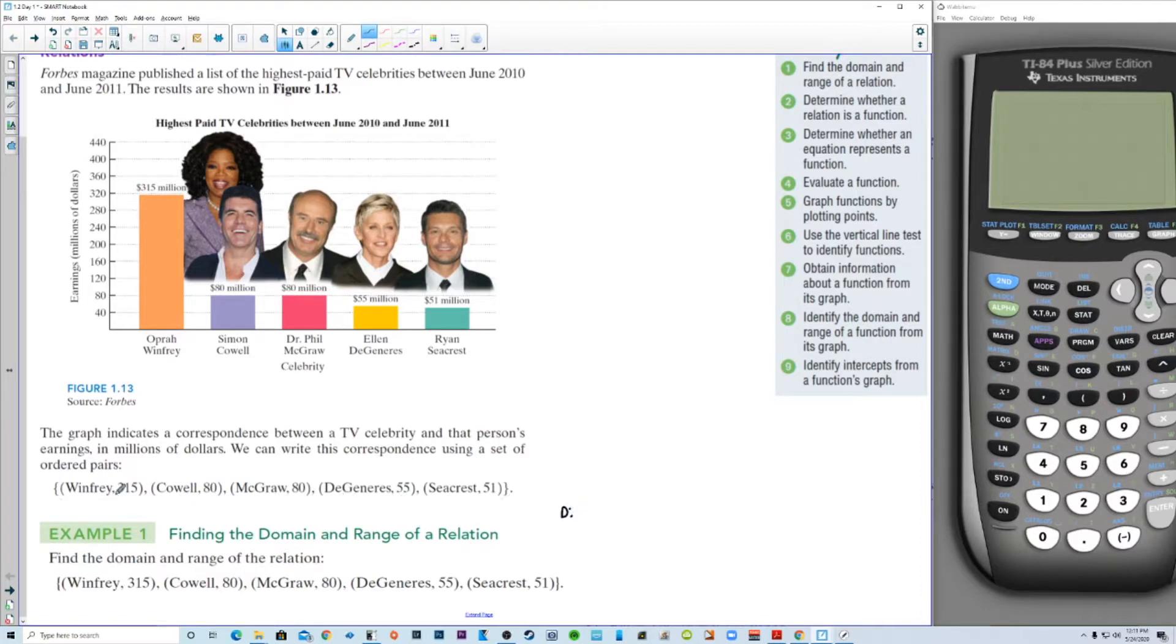So the domain is the set of input values or set of X's. In this case, they're actually words. Names, that is. So Winfrey, Cowell, McGraw, DeGeneres. I had to think of how to say that. Ellen DeGeneres. And then Seacrest. So we usually use the curly brackets to denote domain and range. And then the range is the output values or the Y's.